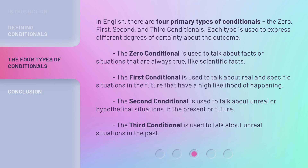In English, there are four primary types of conditionals: the zero, first, second, and third conditionals. Each type is used to express different degrees of certainty about the outcome. The zero conditional is used to talk about facts or situations that are always true, like scientific facts. The first conditional is used to talk about real and specific situations in the future that have a high likelihood of happening. The second conditional is used to talk about unreal or hypothetical situations in the present or future. The third conditional is used to talk about unreal situations in the past.